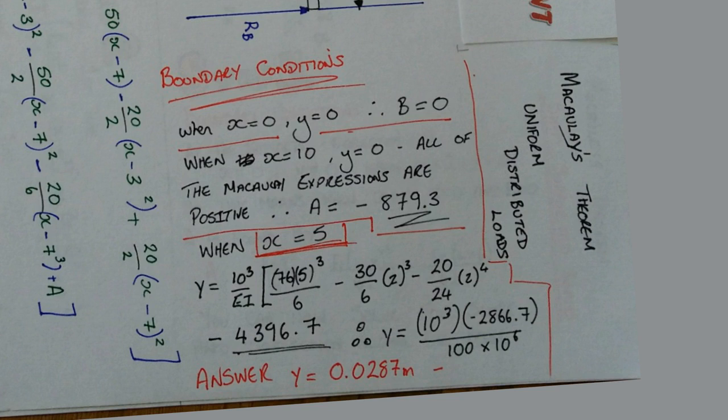So the Macaulay expressions are positive. Therefore, A is equal to minus 879.3. Therefore, when X is equal to 5, basically plug in the numbers.